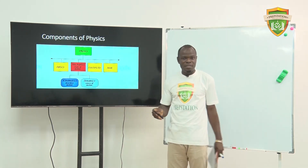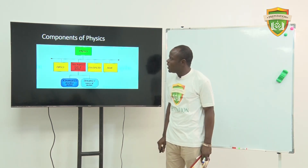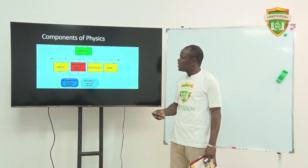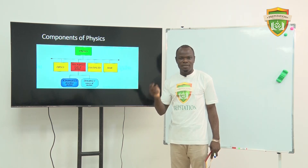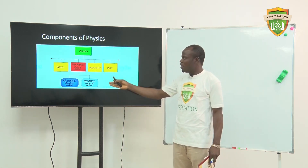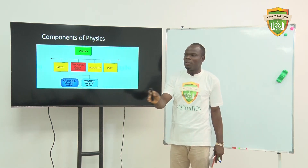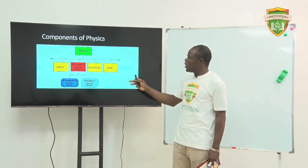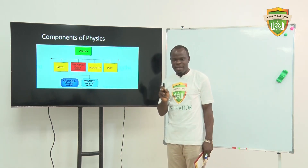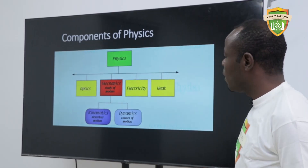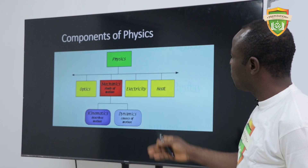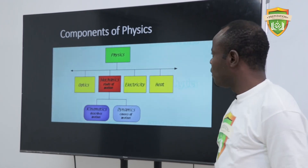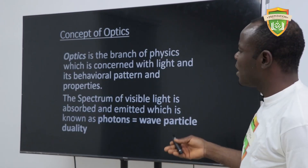The components of physics that you are going to meet — there are four of them. You have optics, which deals with light. We have mechanics, which is the study of motion. It is divided into two parts: kinematics, which talks about motion, and dynamics, which talks about the cause of that motion. The third component is electricity, and the fourth one is heat. For this class, we are going to start with optics.